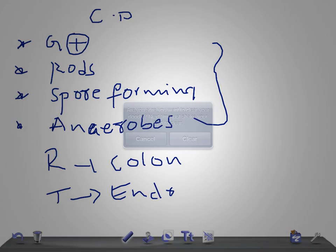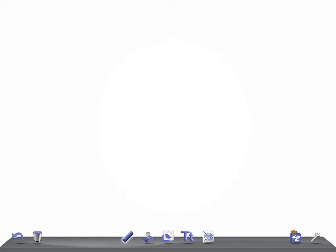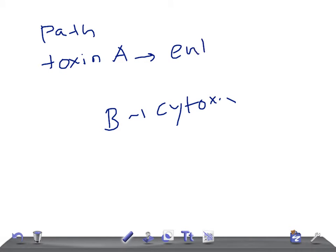Now let's talk about the pathogenesis. It produces two types of toxins: toxin A and toxin B. Toxin B is a cytotoxin. Toxin A is enterotoxin that damages the mucosa leading to fluid increase.